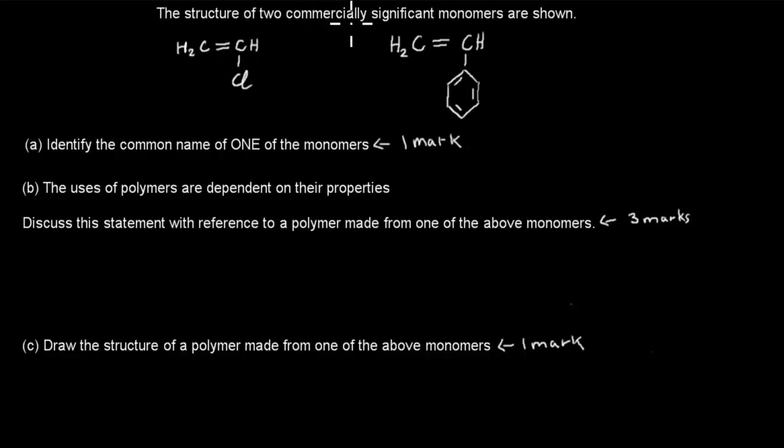the structure of two commercially significant monomers are shown below. This one here and this one here. (a) Identify the common name of one of the monomers, that's worth one mark. (b) The uses of polymers are dependent on their properties. Discuss the statement with reference to a polymer made from one of the above monomers, that's worth three marks.